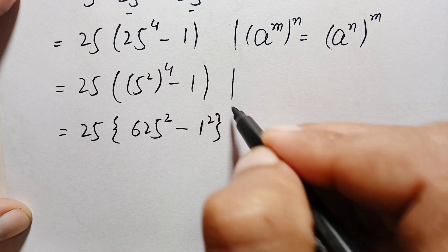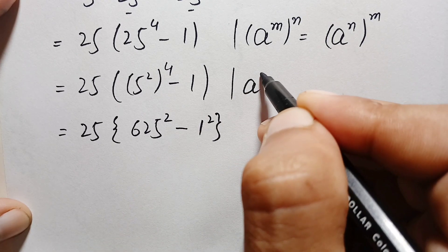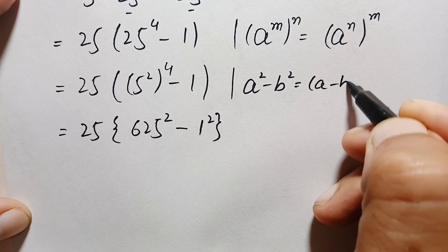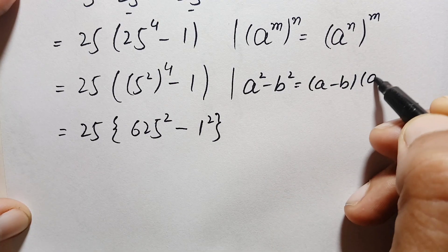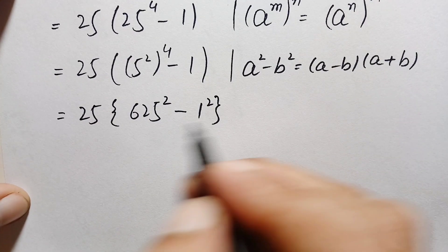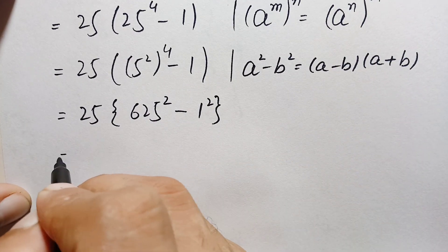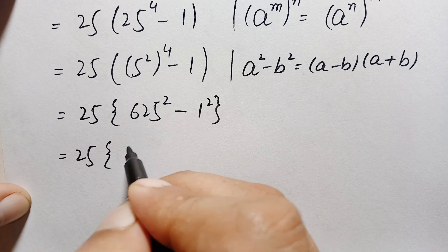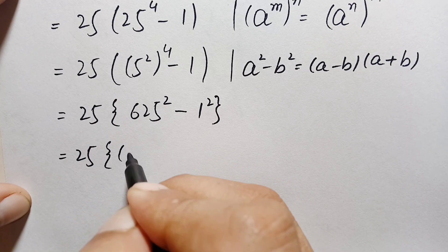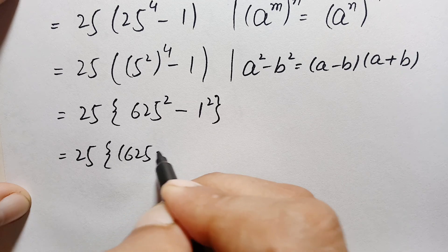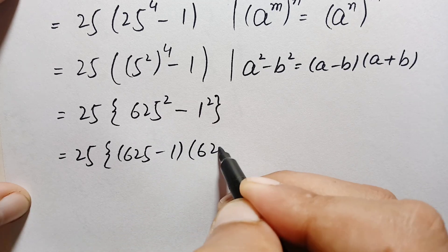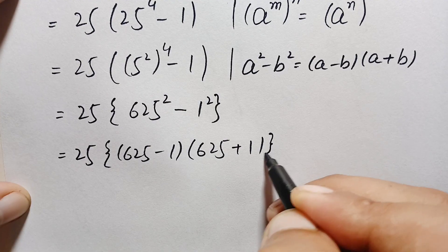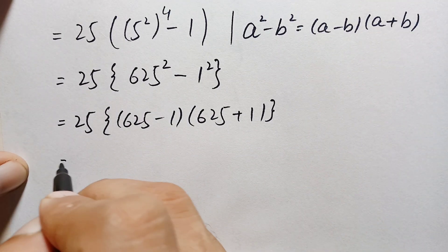We will use the identity a squared minus b squared, which equals (a minus b) times (a plus b). Using this identity, the expression becomes 25 times (625 minus 1) times (625 plus 1).